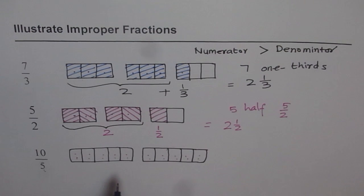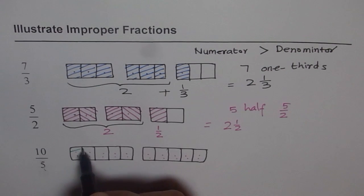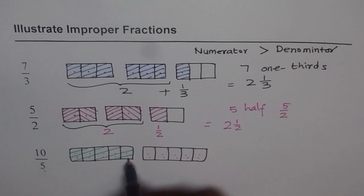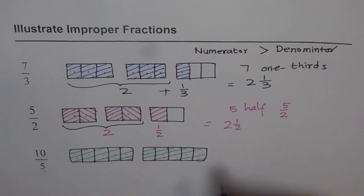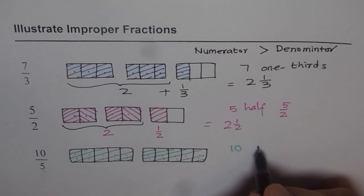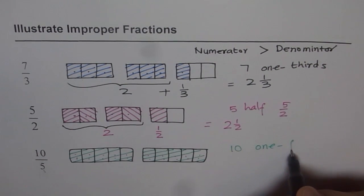That means I need to color all of them to get 10 out of 5. Let's color all of them. So that we have 10 out of 5. That means 1 fifths, 10 of those. 10 one-fifths. Right? So that means 10 one-fifths.